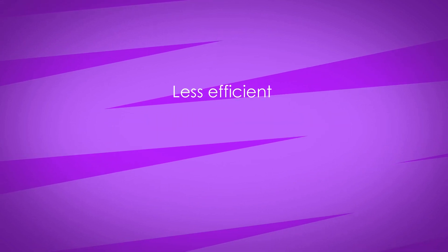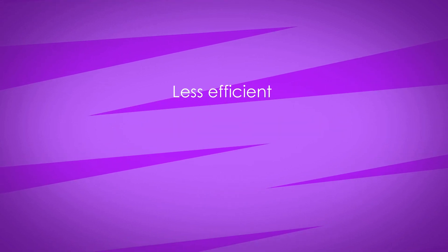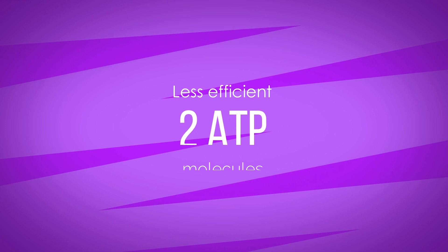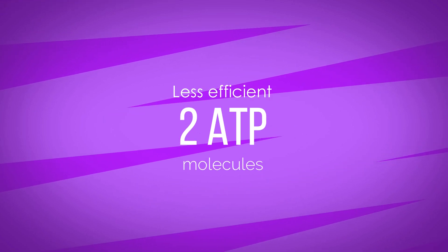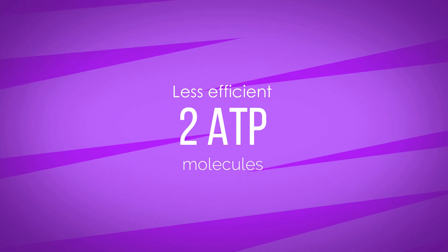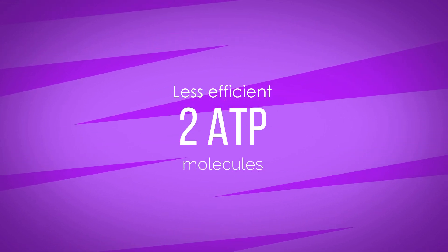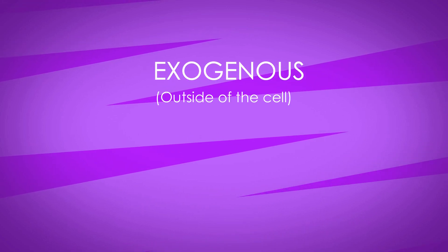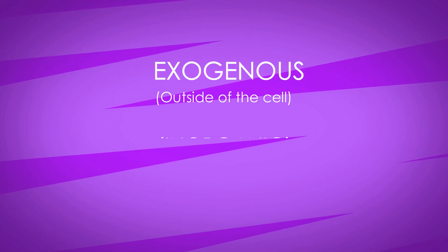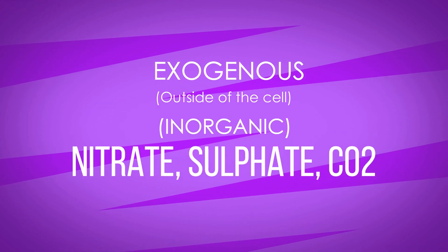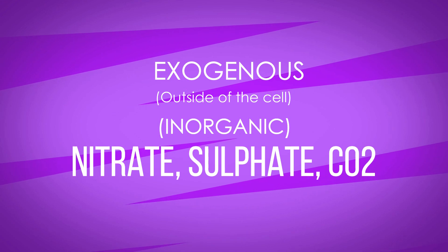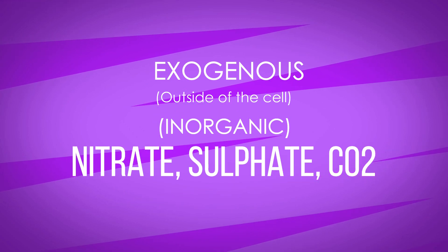Anaerobic metabolism is less efficient and produces only two ADP molecules synthesized through glycolysis. The final electron acceptor is exogenous in nature and can be inorganic, such as nitrate, sulfate, and carbon dioxide.